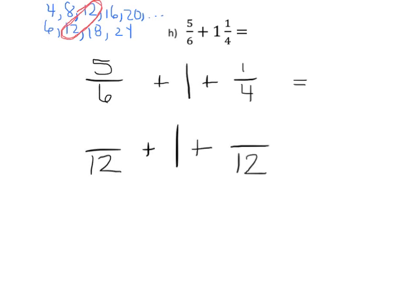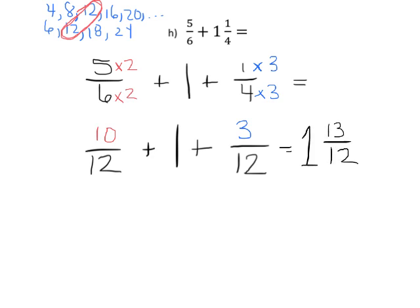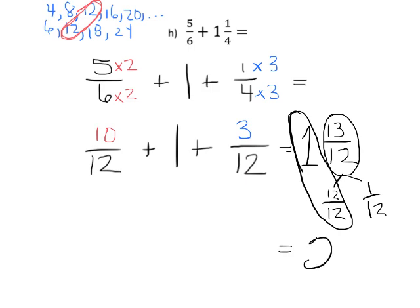Each of these sixths, in order to get 12 pieces, needs to be cut in half — times by 2 — which means we take the 5 and times by 2, giving us 10 twelfths. Then similarly, 4 times 3 gives us 12, so 1 times 3 gives us 3. Our answer is 1 whole plus 13 twelfths. And 13 twelfths can be thought of as 12 twelfths plus 1 twelfth, so 1 whole plus 12 twelfths equals 2 and 1 twelfth. Our answer is 2 and 1 twelfth.